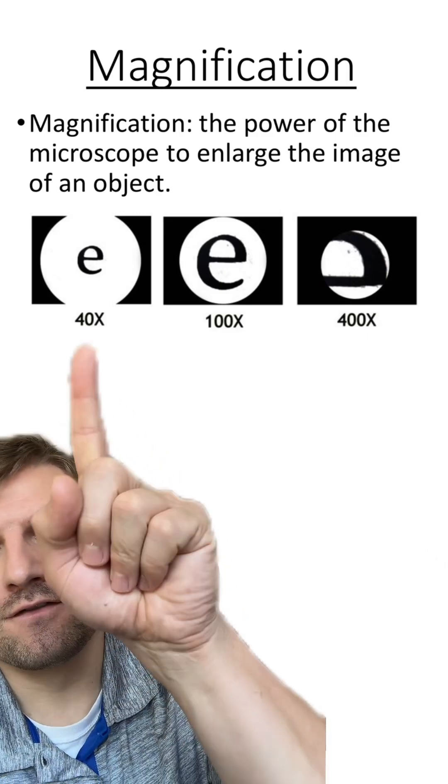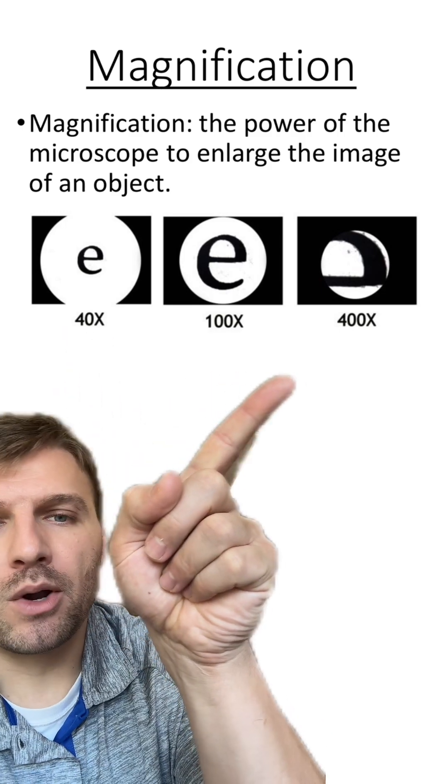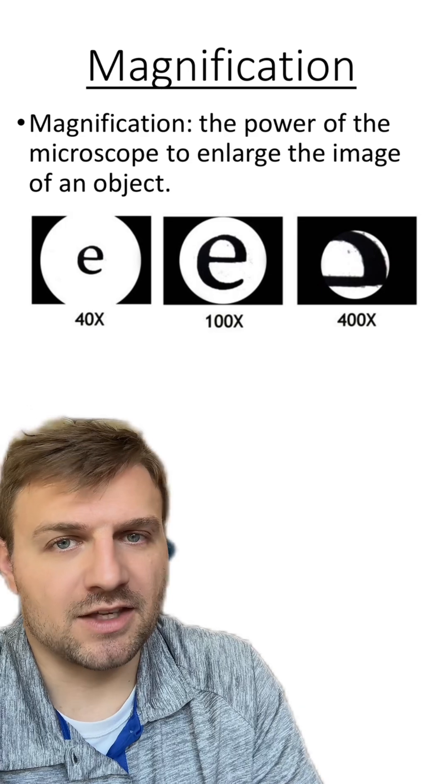This is why we can see the full letter E under the 40, but only part of the E under the 400x magnification.